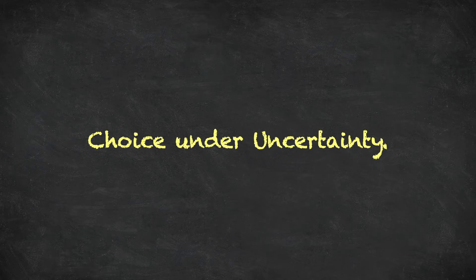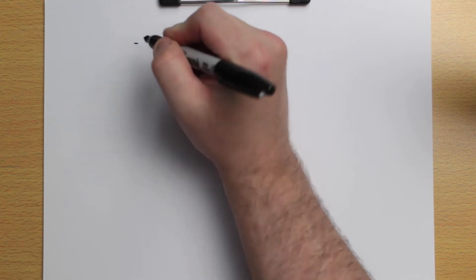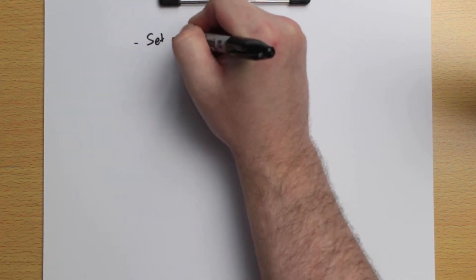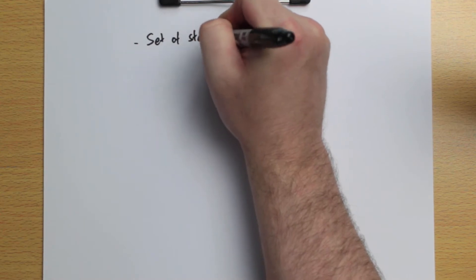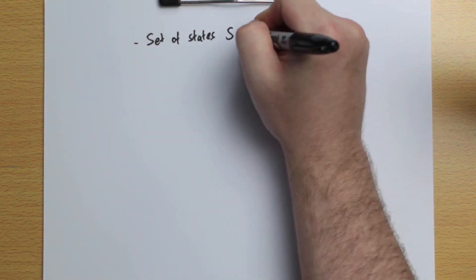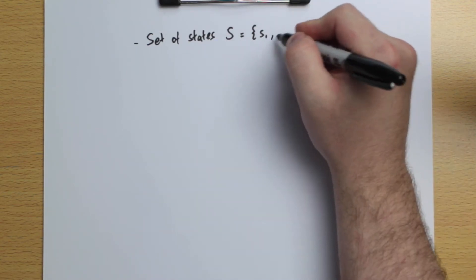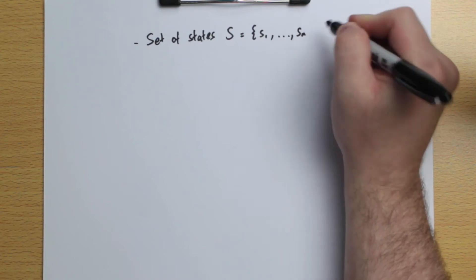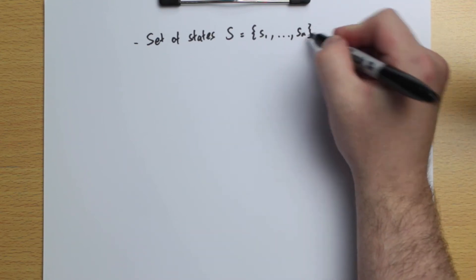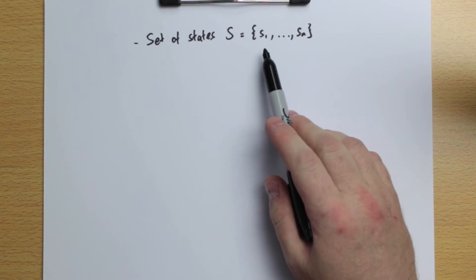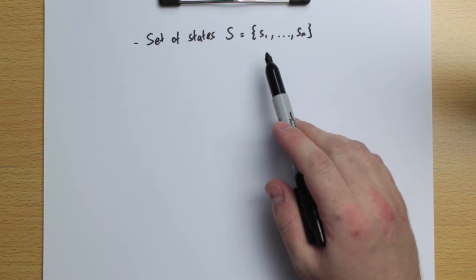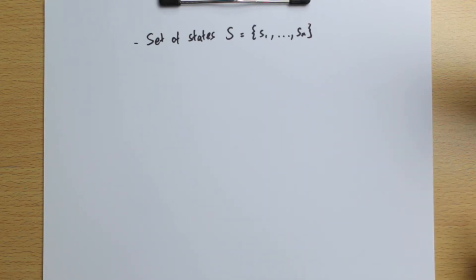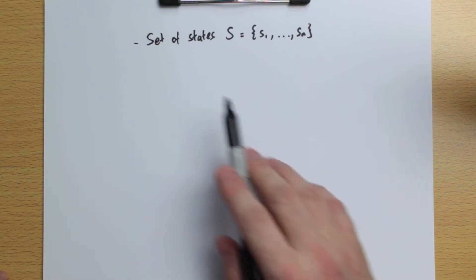So before we develop the theory of the value of information, let's go over the basic model of choice under uncertainty again. We saw this in Lecture 1, but we're going to need it today. For choice under uncertainty, we start with a set of states of the world, which we'll denote capital S. We'll use lowercase s's for the states — s1 up to sn. Remember that if you know the state of the world, there is no uncertainty. Uncertainty exists when you don't know the state of the world.